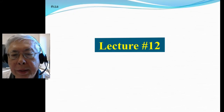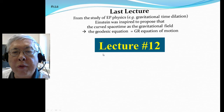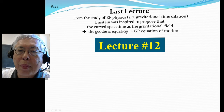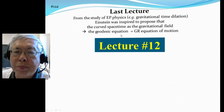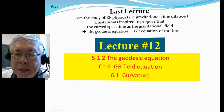Here's lecture 12. In the previous lecture, we learned that from the study of the equivalence principle of physics — for example, gravitational time dilation — Einstein was inspired to propose curved space-time as the gravitational field. Then naturally, the gravitational equation of motion is the geodesic equation, being the straightest possible curve in curved space-time. In this lecture, we'll continue to discuss the geodesic equation, then start on chapter 6, talk about the GR field equation, and have a short introduction to curvature.